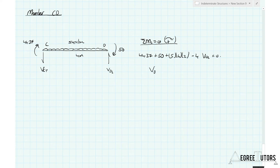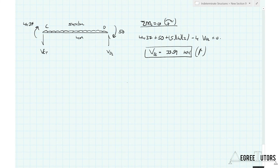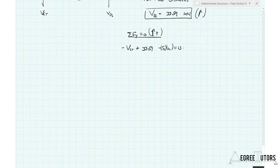Cutting member CD: VDL is equal to 33.59 kN acting up. Taking sum of forces in the y-direction, VCR is equal to 13.59 kN acting down.